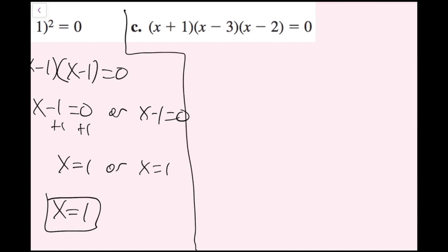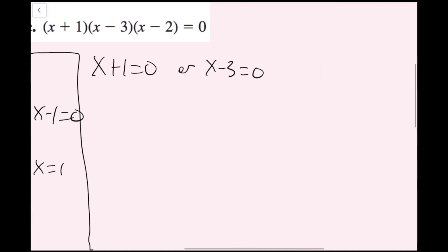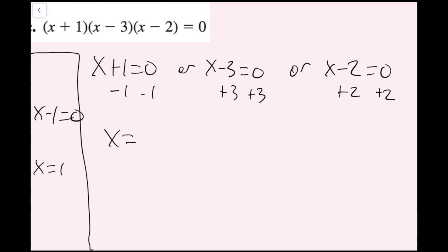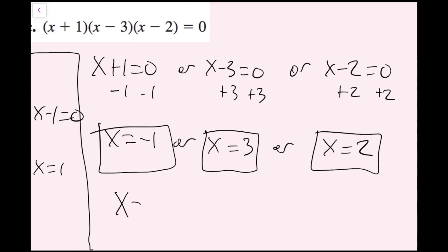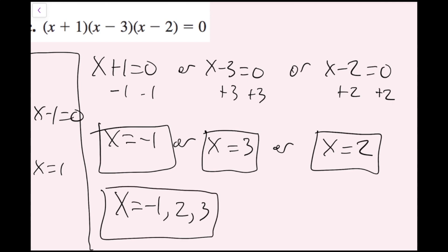For part C, I have x plus 1 times x minus 3 times the quantity x minus 2 equals zero. There are more than two things being multiplied, but I just set all of them equal to zero: x plus 1 equals zero, or x minus 3 equals zero, or x minus 2 equals zero. Solving these gives x equals negative 1, or x equals 3, or x equals 2. I can write x equals negative 1, 2, 3.